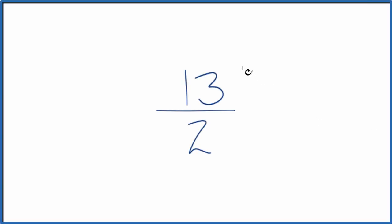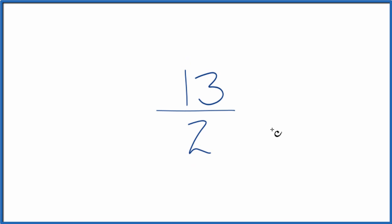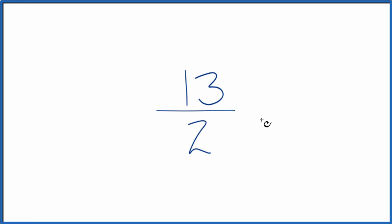Let's simplify the fraction 13 over 2. What we want to do is find another fraction that's equivalent — has the same value as 13 over 2 — just simplified or reduced to lowest terms.